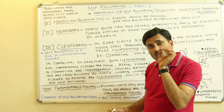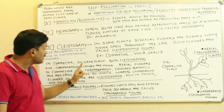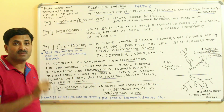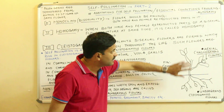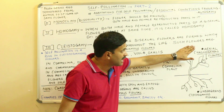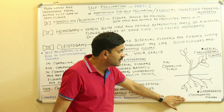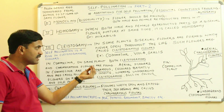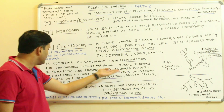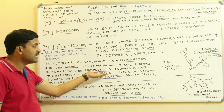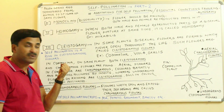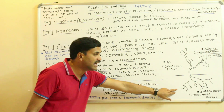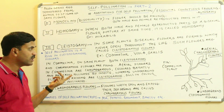In a Commelina plant, both cleistogamous and chasmogamous flowers are found on the same plant. As shown in the diagram, the aerial flowers in Commelina are chasmogamous — they open, are brightly colored, and cross-pollination occurs with the help of insects because insects are attracted to them. The underground flowers, present on the rhizome, are cleistogamous and are dull in color.